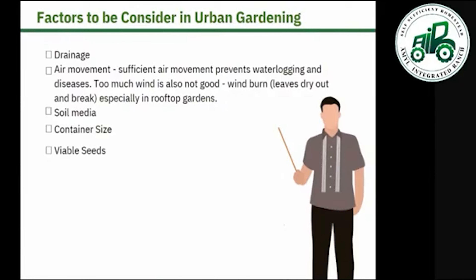Factors to consider in urban gardening — first is drainage. Considering drainage in urban gardening is essential for ensuring plant health, managing water effectively, and promoting sustainable gardening practices.